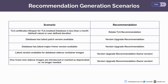The recommendation engine always suggests the minimum possible version for both types of recommendation. While suggesting a version, the recommendation engine also maintains version upgrade constraints, so users can safely upgrade to the suggested version and don't need to worry about version compatibility after application.